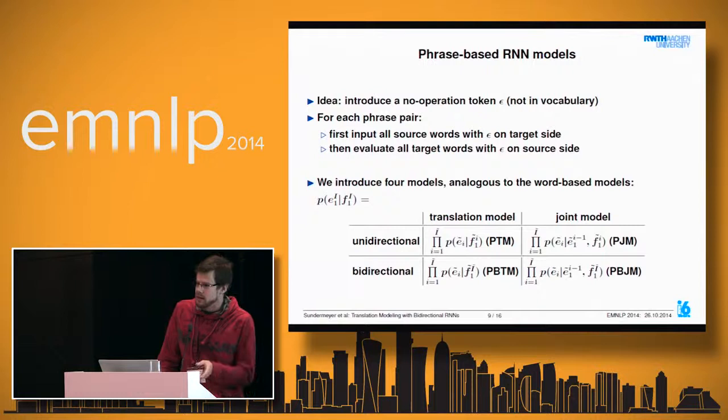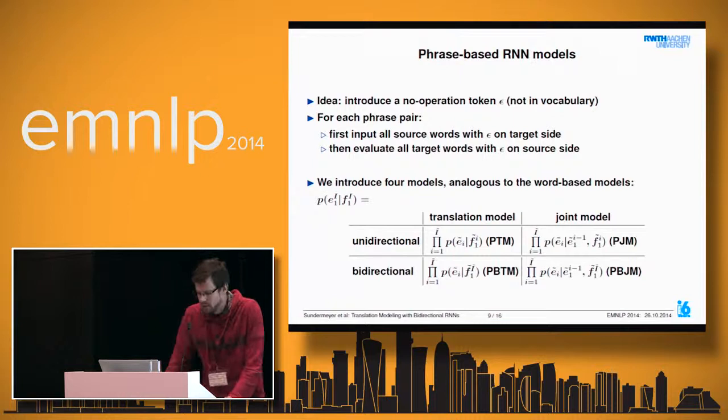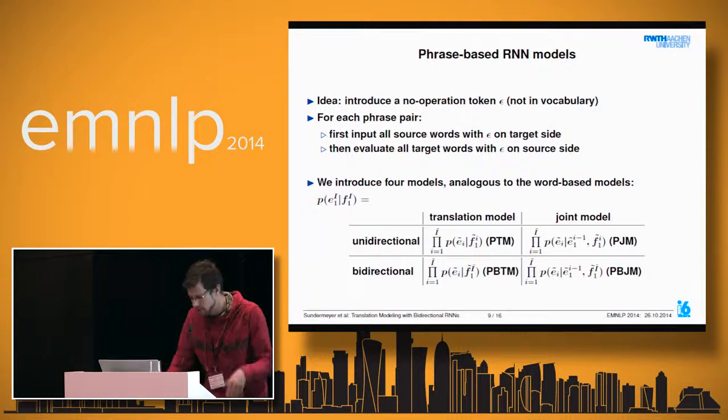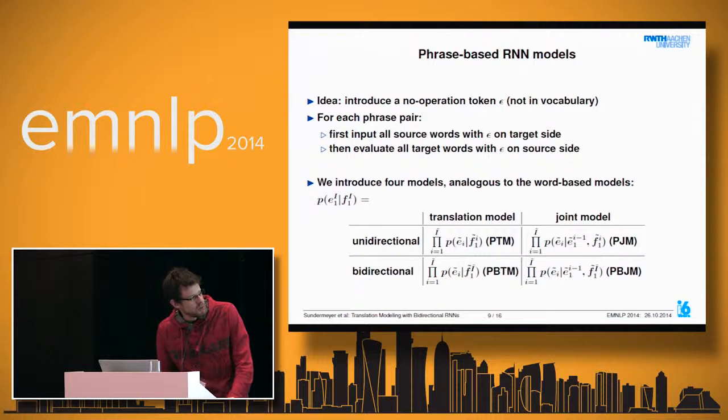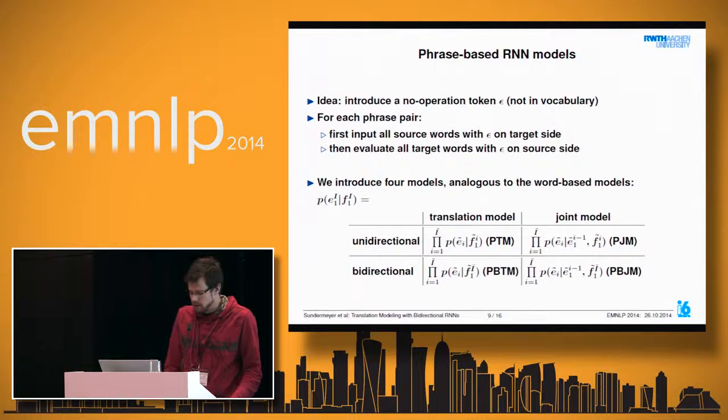The network state is still progressed one time step. In our phrase-based approach, we first input all source words with an epsilon on the target side. Once all source phrase information is encoded in the hidden layer, we start evaluating target words one at a time using an epsilon token on the source side. Similar to word-based models, we can define four model variants depending on independence assumptions over target history and future source information.